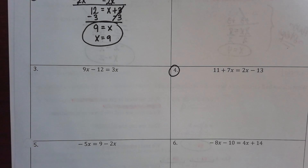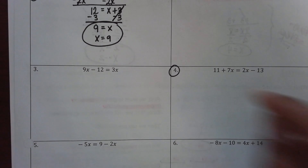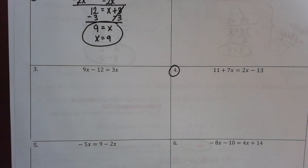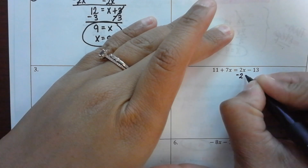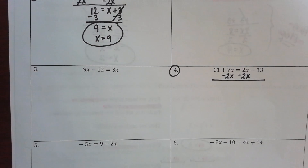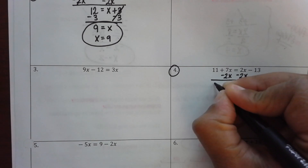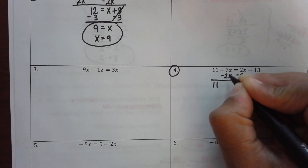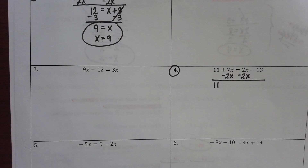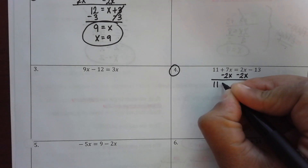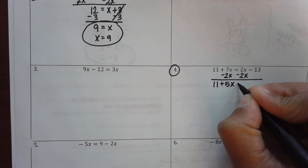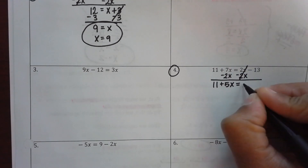Let's look at 4. Some people got really stuck on this one. The biggest thing I saw was — leave it as a fraction. I gave you full credit if I saw the fraction and the decimal, but leave it as a fraction because in algebra that's the most accurate answer. So, I have 11 plus 7x equals 2x minus 13. What's my first step? Subtract 2x because I have to get my variable terms on one side. The 2 is the smallest one. What's being brought down from left to right? 11. Plus 5x. What happens to those twos? Negative 13.